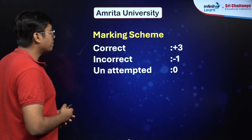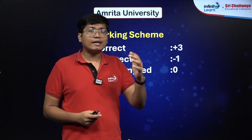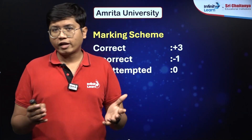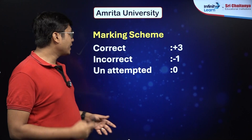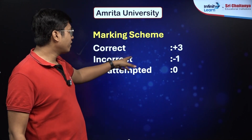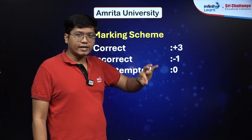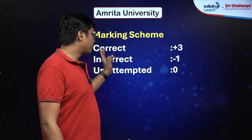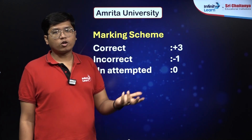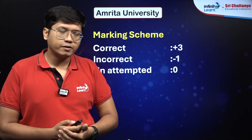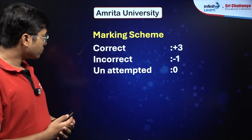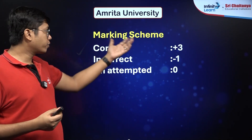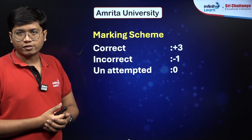The marking scheme has negative marking, unlike many other private engineering exams which do not. In the AEEE exam you have negative marking of minus 1 for incorrect answers. Unattempted questions still get 0. For correct answers you get plus 3, not plus 4. So your total exam score becomes 300 — 100 questions at plus 3 each.